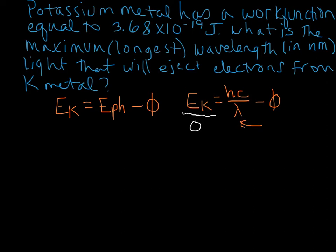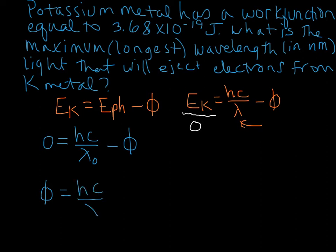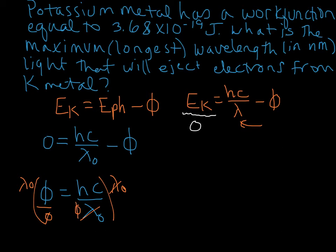So let's go ahead and do that. I'm going to write the equation: zero is equal to hc over lambda-not — because that's the threshold — minus the work function. Let's rearrange this: I'm going to put the work function on the other side by adding it to both sides, giving hc over lambda-not. Then multiplying both sides by lambda-not and dividing out the work function, our threshold wavelength lambda-not is equal to hc over the work function.